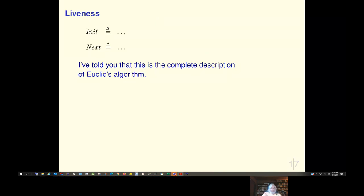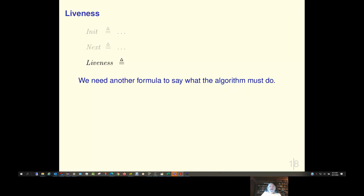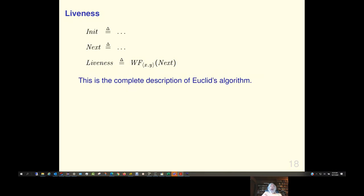Now, I've told you that this is the complete description of Euclid's algorithm, but I lied. These formulas actually say what the algorithm is allowed to do. That's called safety. They don't say what it must do. They allow it, in fact, to stop at any time. This seems weird to people, but there's a good reason for it. I'm not going to go into that. If we don't want it to stop, we also have to say not what it may do, but what it must do. And that's called liveness. So, we need another formula to say what the algorithm must do. It must keep going while x is not equal to y. And an equivalent way to say that is x or y must keep changing while next allows it. And that's written by this funny formula. Don't worry about what that formula means. But I'm just to show you how simple it is. And this is the complete description of Euclid's algorithm. Now, I think this is really cool. You may not agree, but it is very useful.